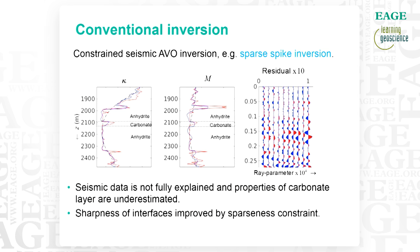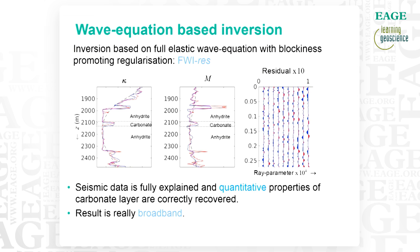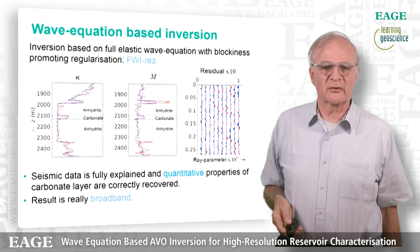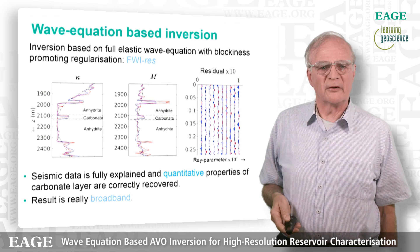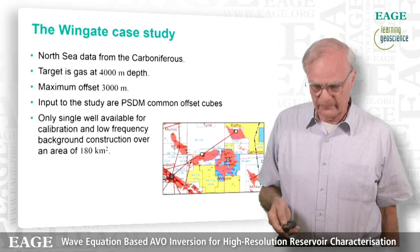Finally, we go for the wave equation-based inversion. We really solve the full wave equations, and now you see a very good quantitative match. The carbonate is fully recovered, the data is fully explained, and the result is really broadband. That's because it's FWIRES — Full Waveform Inversion Reservoir-oriented — and it's really broadband because of the nonlinear relationship between the data and the properties.